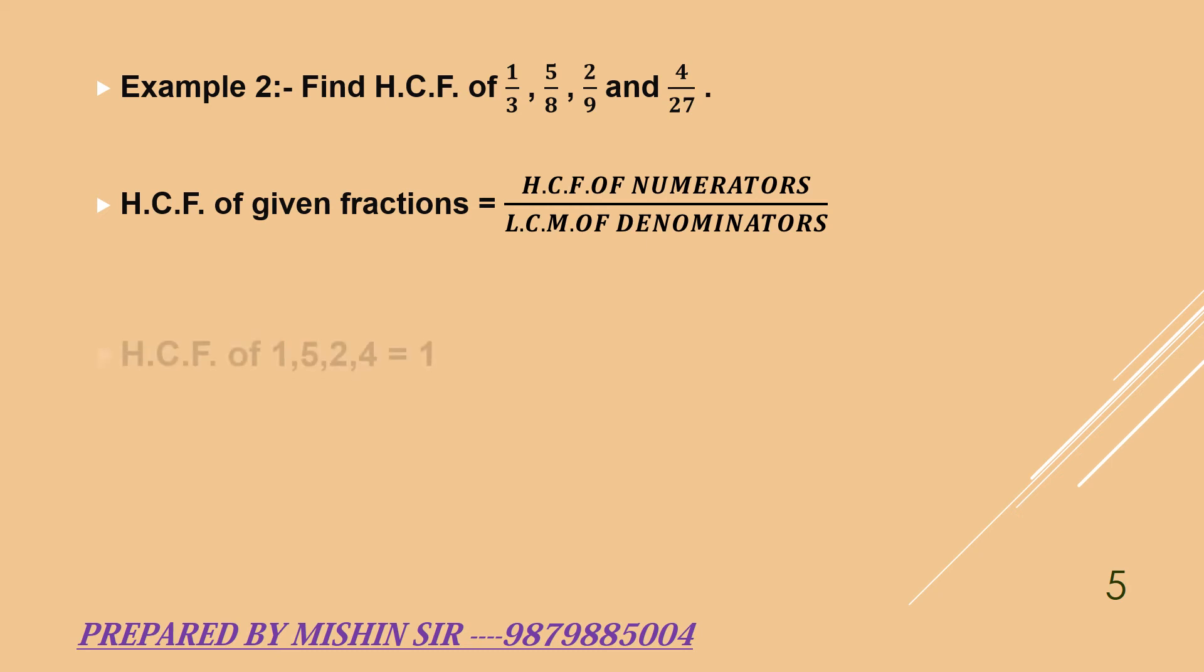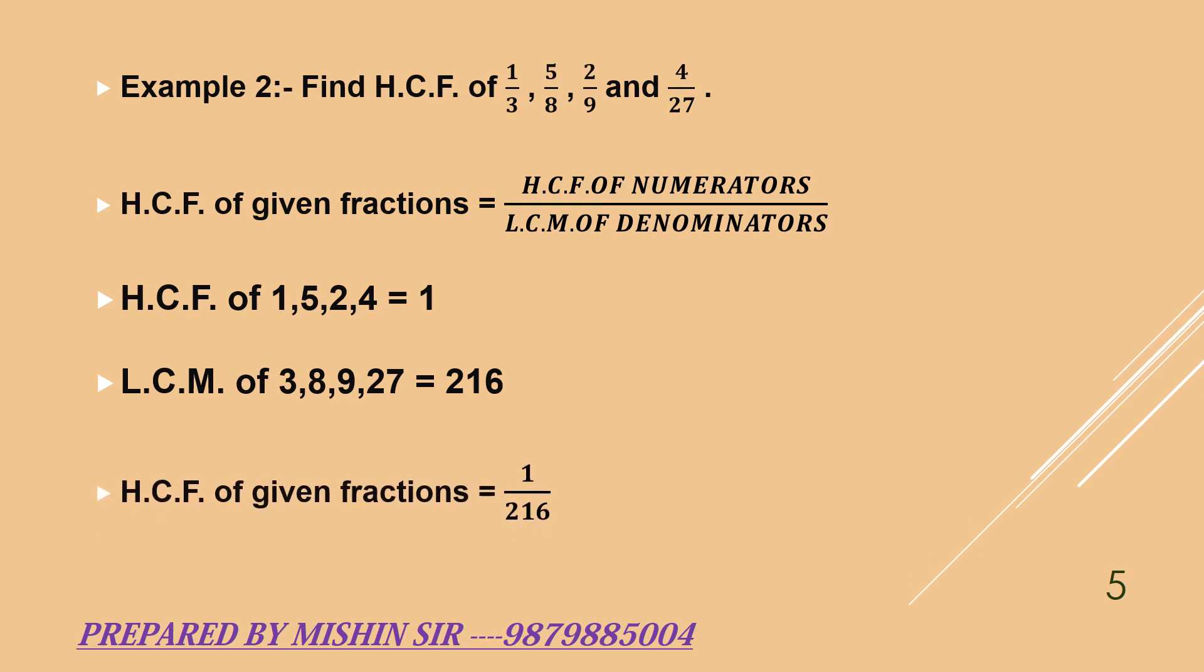HCF of numerators 1, 5, 2, and 4 is 1. Now we find LCM of denominators 3, 8, 9, and 27. LCM is 216. Substituting the values in the given formula, we get HCF of given fractions equals 1/216.